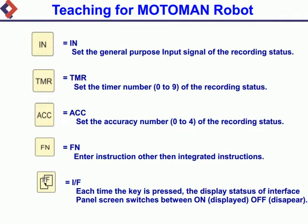ACC: sets the accuracy number (0 to 4) of the recording status. FN: enters instructions other than integrated instructions. I/F: each time the key is pressed, the display status of the interface panel screen switches between on (displayed) and off (disappear).